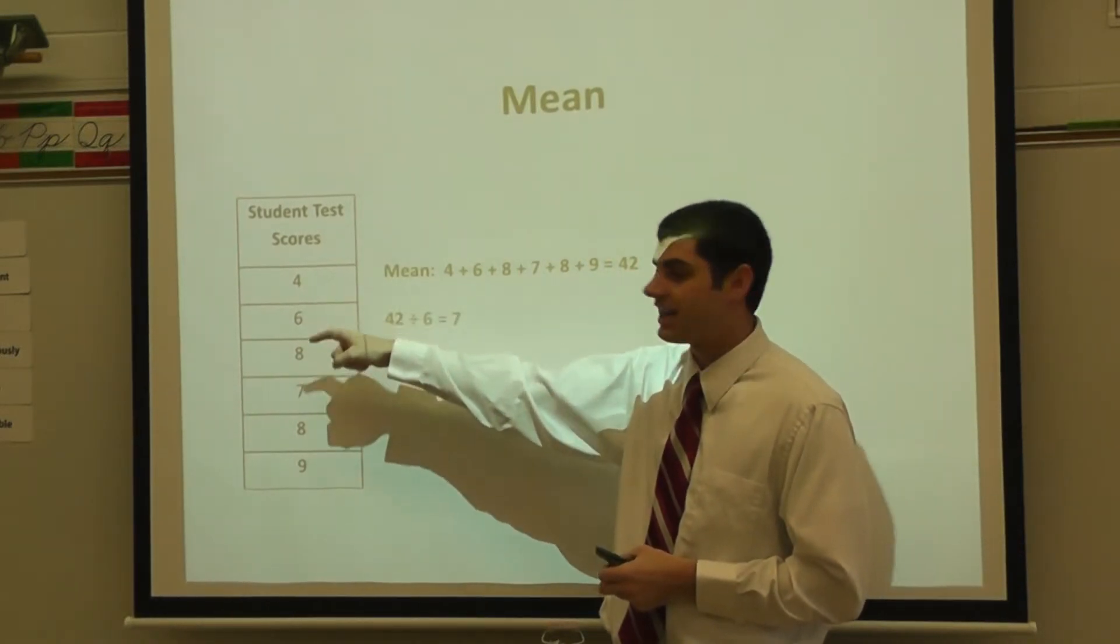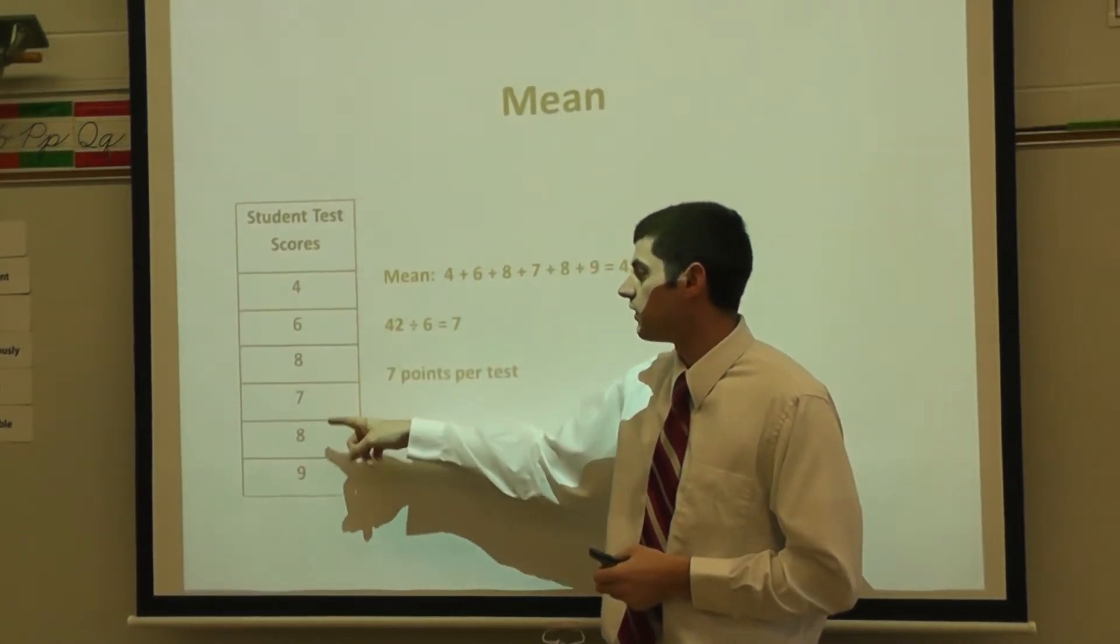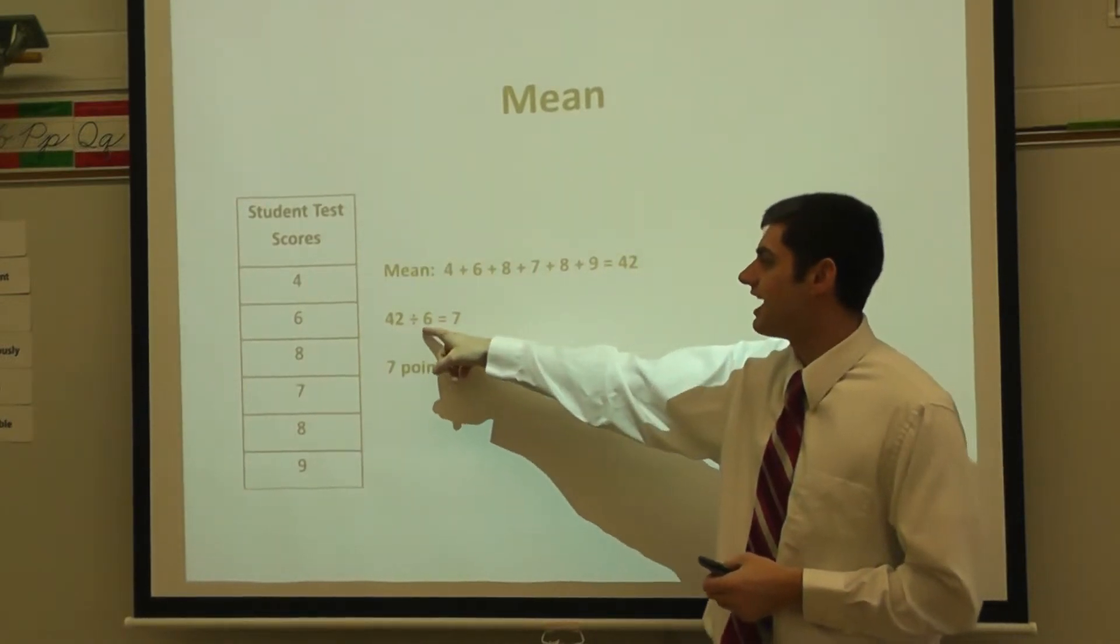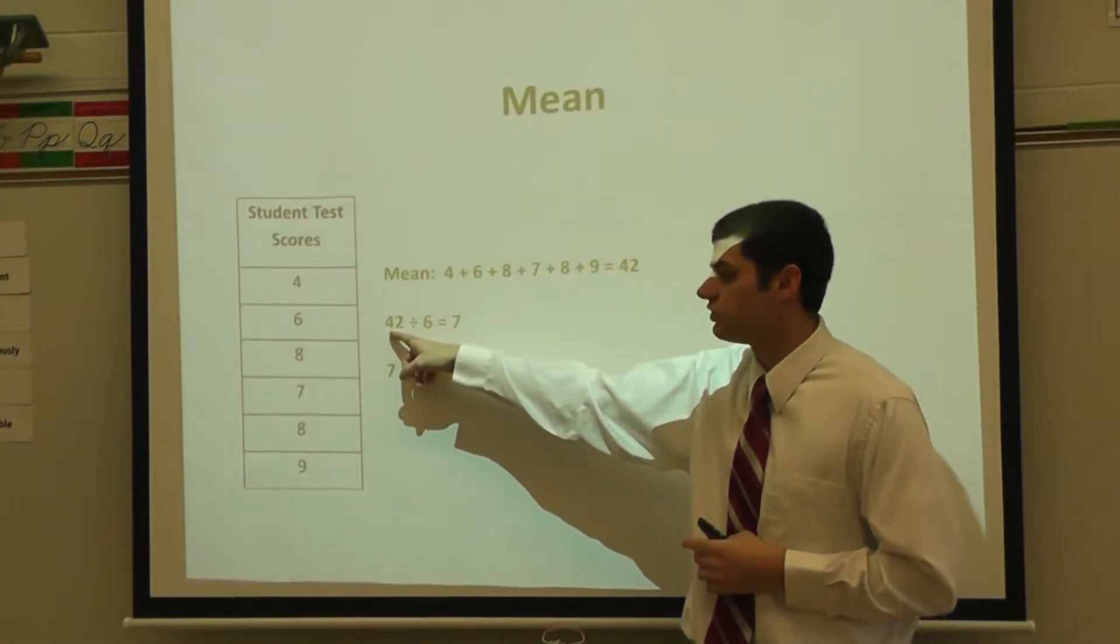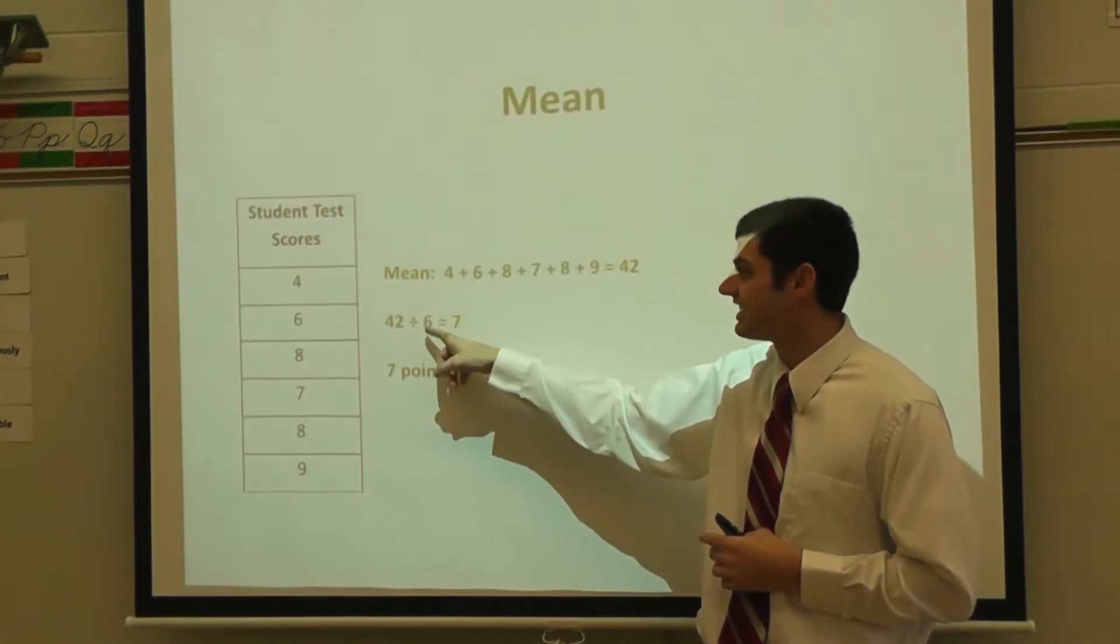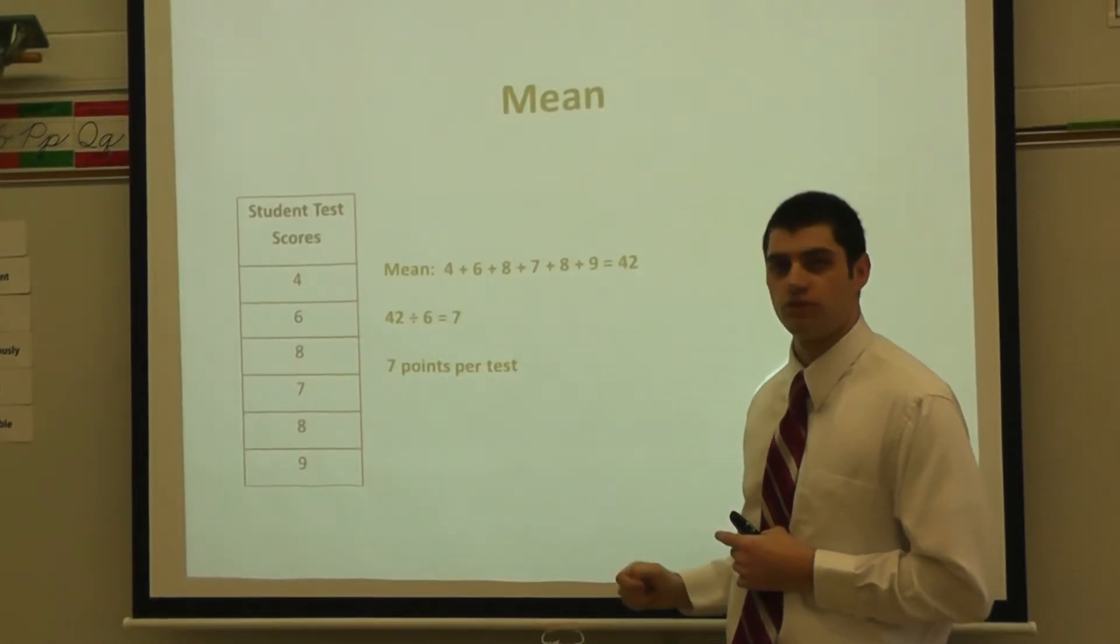Then I count the number of tests I've taken. There's 1, 2, 3, 4, 5, 6. So I'm going to divide by the total number of set of data in there. So 42 total points divided by 6 pieces of data would equal 7.